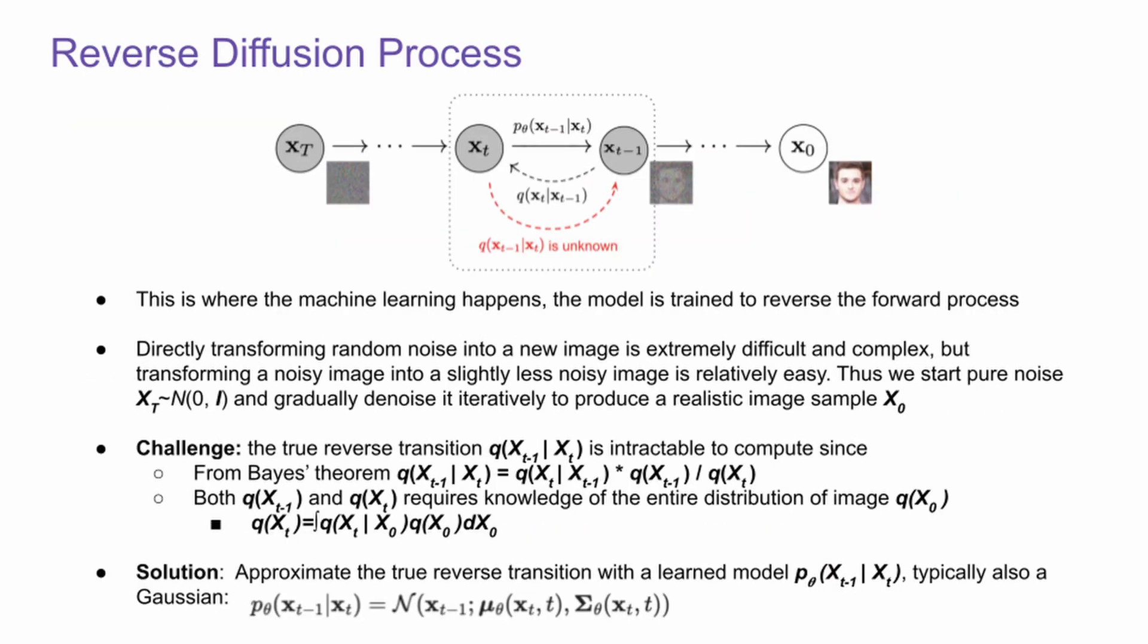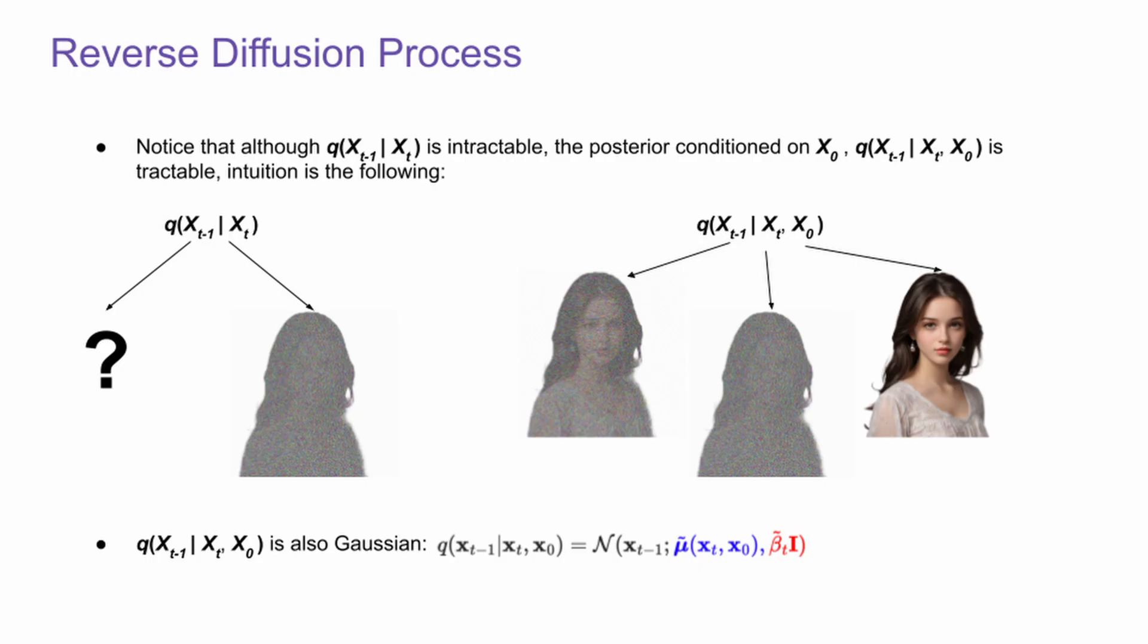Now let's move on to reverse diffusion process. What we want to know is q(xt-1|xt), but it's intractable to compute. So our solution is to have a learned model to approximate this intractable true distribution. Although q(xt-1|xt) is intractable, the posterior conditioned on x0 is tractable. And this is the intuition.